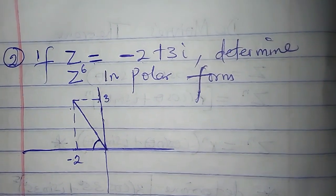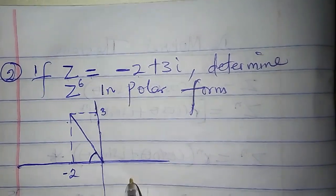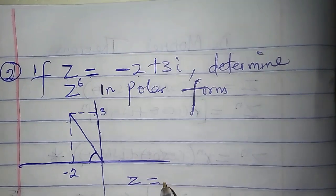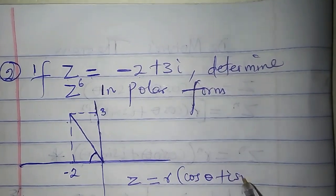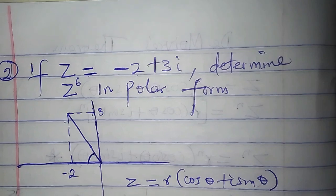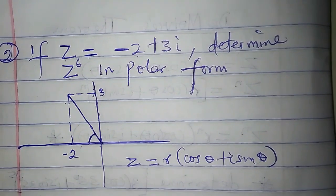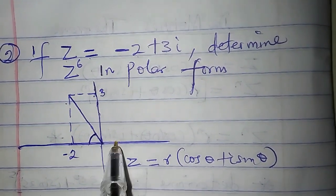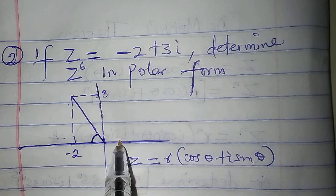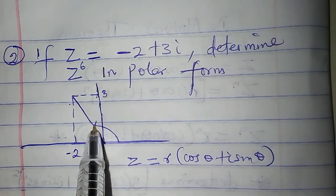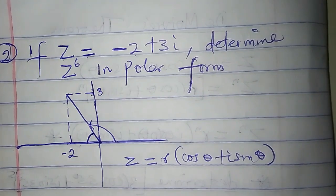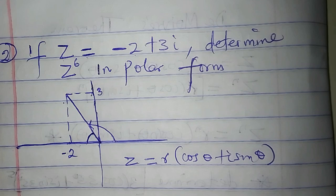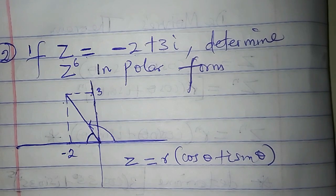The polar form of a complex number is z equal to r cos theta plus i sine theta. r is the modulus, theta is the argument. The argument is measured from the positive real axis down to a line.